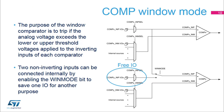The purpose of the window comparator is to trigger an interrupt if the analog voltage goes beyond the defined lower and upper voltage thresholds applied to the inverting inputs of each comparator. This event can generate an interrupt through the EXTI line. Two non-inverting inputs can be connected internally by enabling the WIN mode bit, and therefore save one I/O for another purpose.